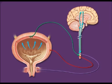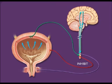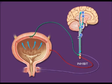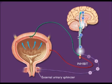If urination is not convenient at the time, the brain sends impulses down the spinal cord to inhibit the micturition reflex. Impulses carried via somatic motor neurons keep the external urinary sphincter contracted, which also prevents urination.